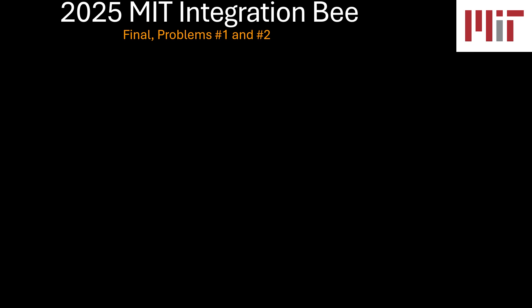We're moving forward to the final of the 2025 MIT Integration Bee, and today we'll focus on the first two problems. We want to take time, be slow, and be methodical about it. Previously we've gone through a big swath of problems all at the same time, but this time we want to go slow and dissect these problems a little bit more carefully.